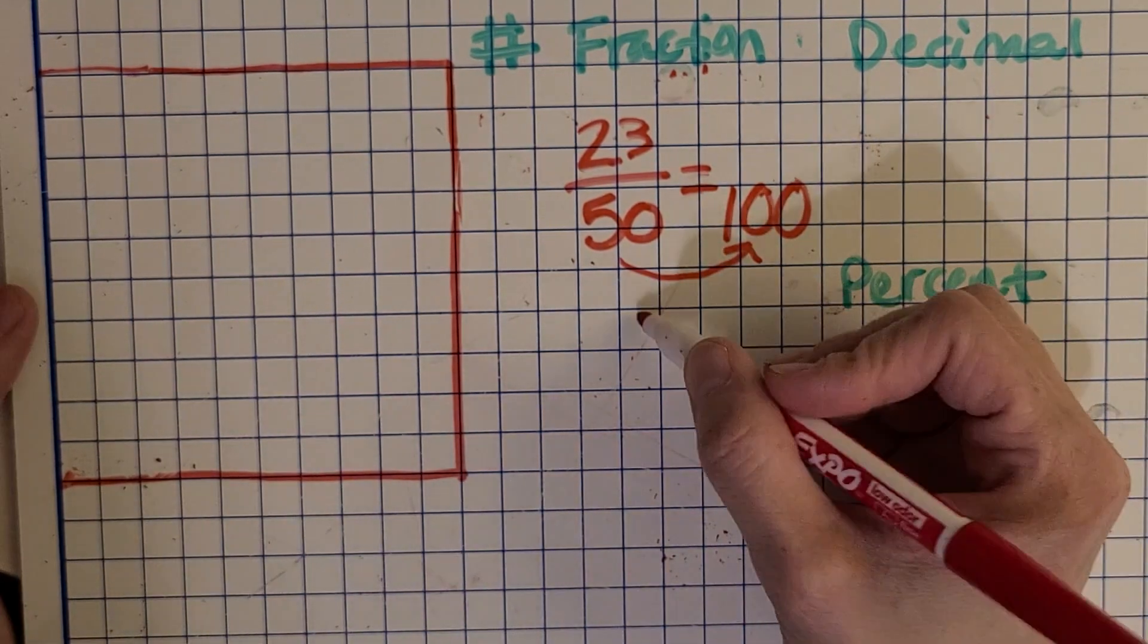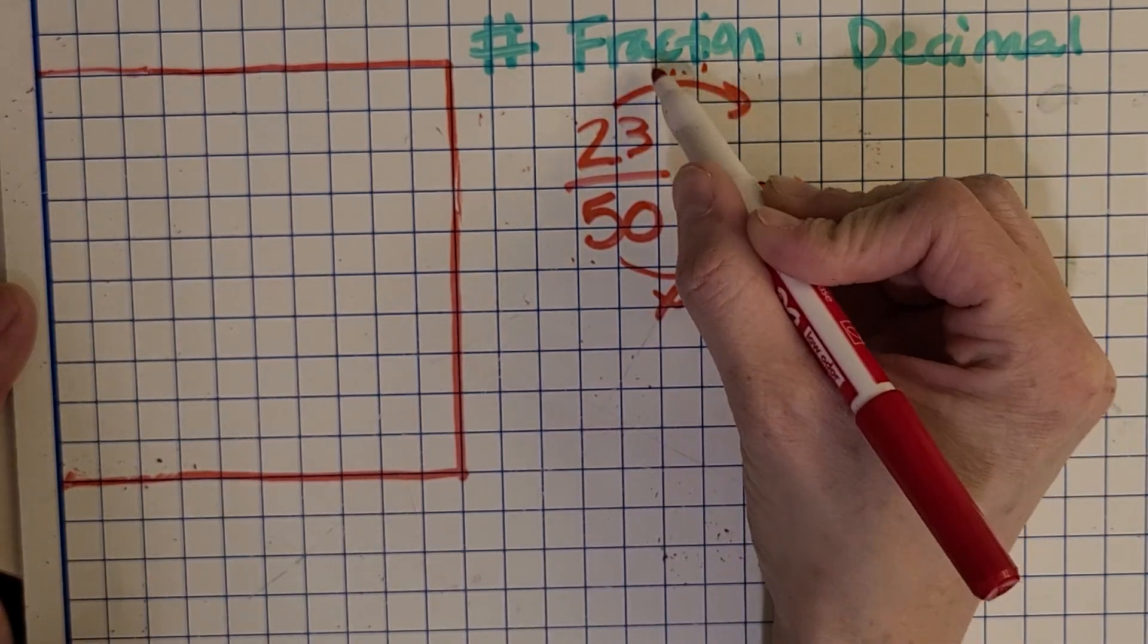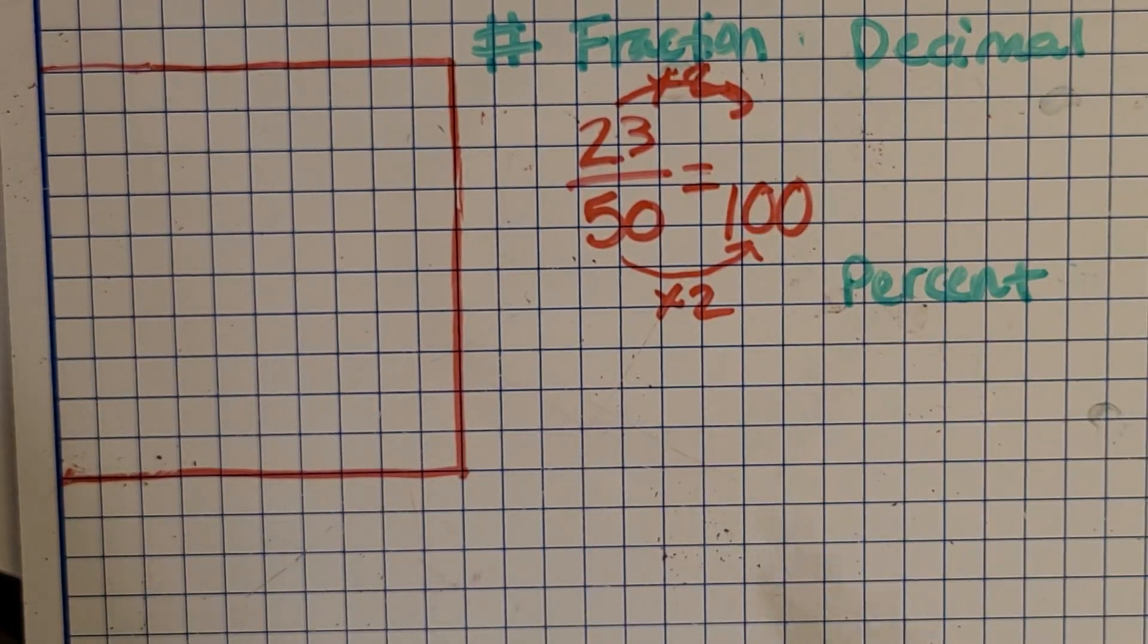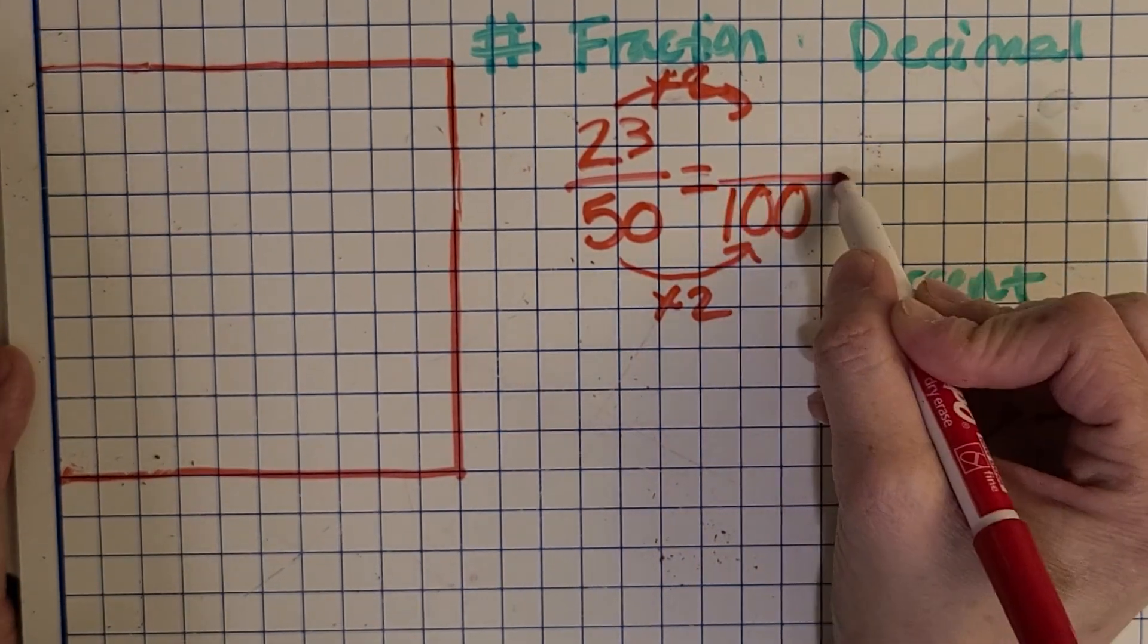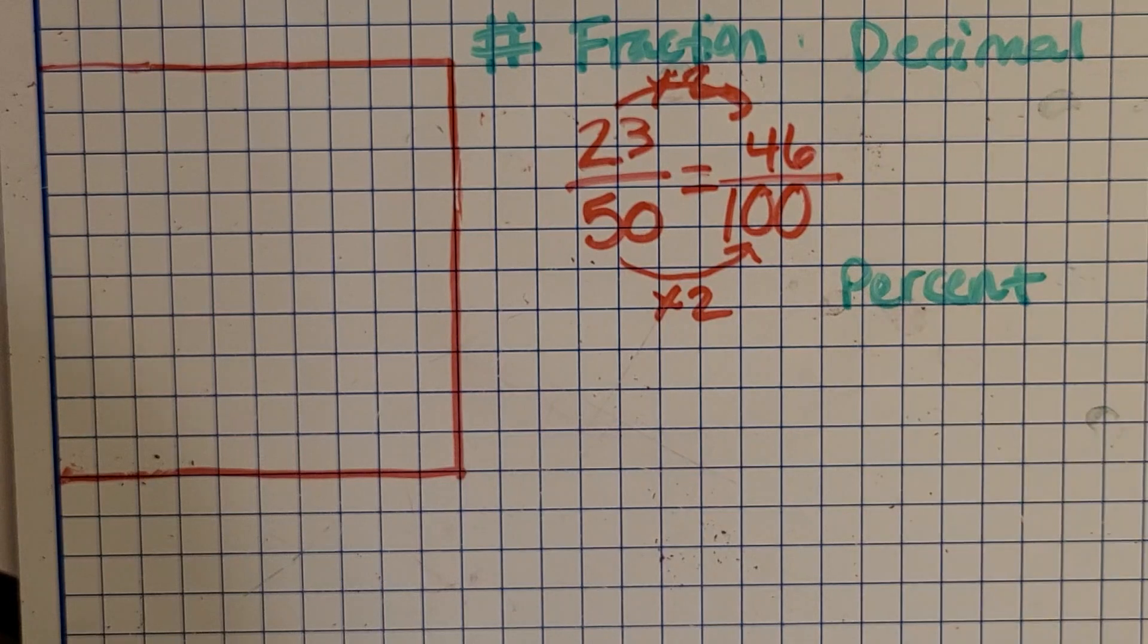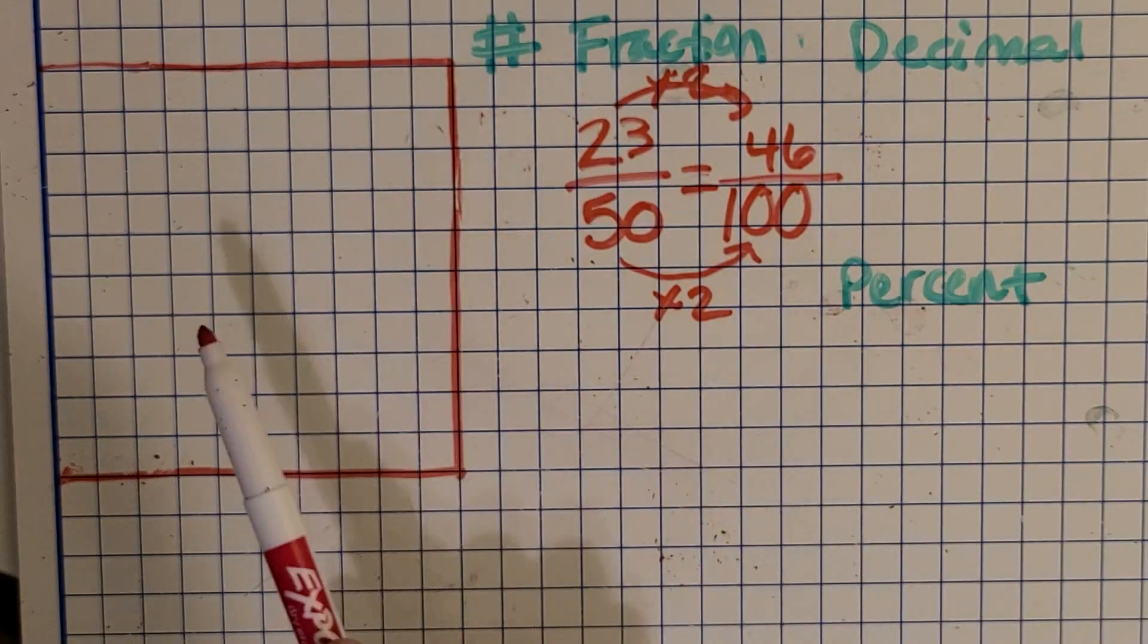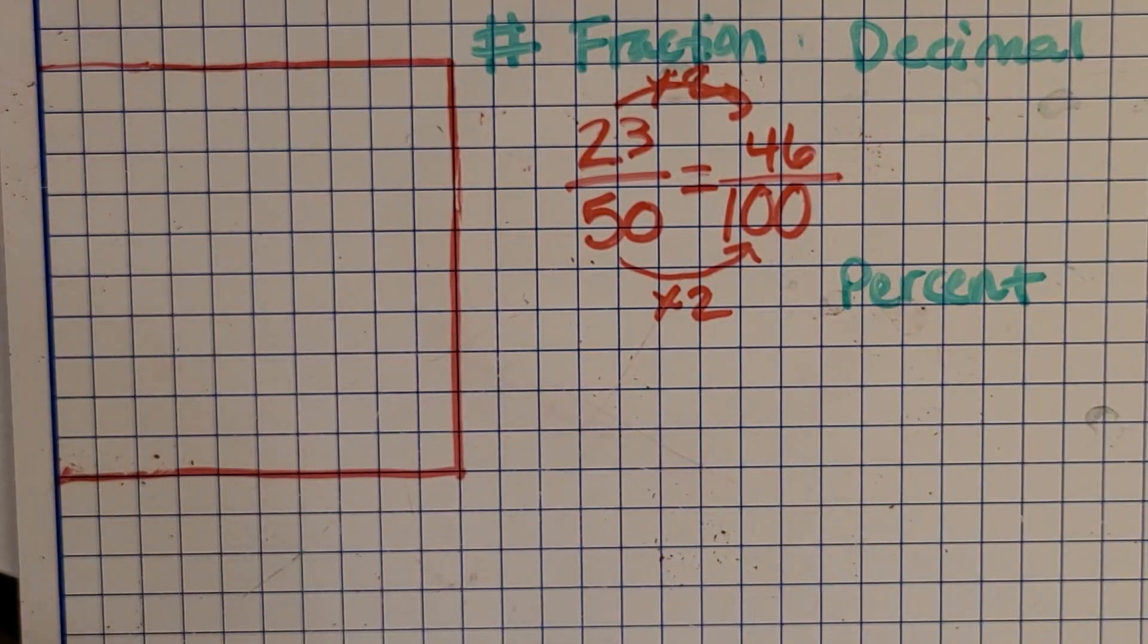Times 2. So I do the same thing up here in the numerator. Times 2. And what is 23 times 2? Yep, 46. So now I know what to shade in. So would you pause the video and think about our shading, our decimal, and our percent?